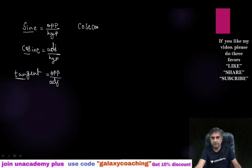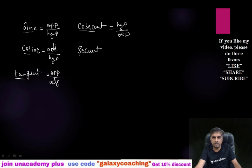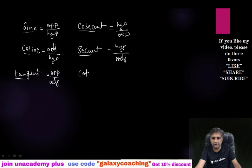Then cosecant — we use only 'cosec' for that — which is the reciprocal of sine, that is hypotenuse by opposite. Then secant — we use only 'sec' for that — that is hypotenuse by adjacent, the reciprocal of cosine. And then cotangent — we use only 'cot' for that — and that is adjacent by opposite. So these are the six trigonometric ratios.